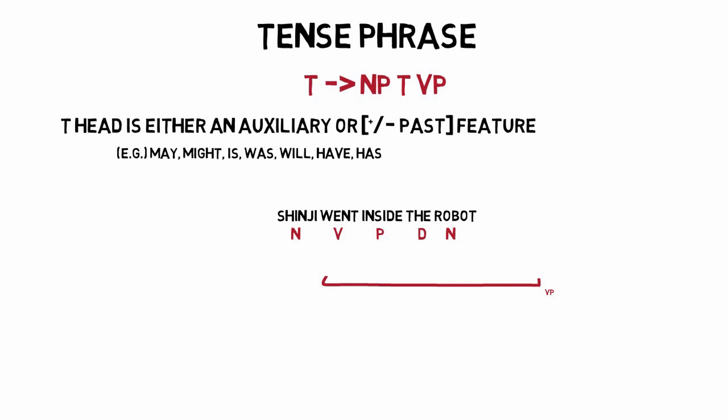Note that a verb phrase is sometimes referred to as a predicate, which again is everything other than the subject. Now, Shinji is a person. We know he's a noun. And since there's nothing else around Shinji, we can call Shinji a noun phrase. Now let's see what we have inside our verb phrase. We have 'went inside the robot.' We know that 'went' is the verb head of the verb phrase, but verb phrases can have noun phrases, prepositional phrases, and adjective phrases embedded.